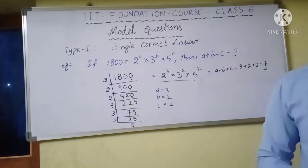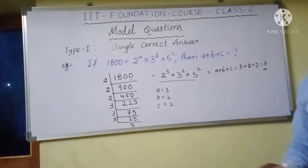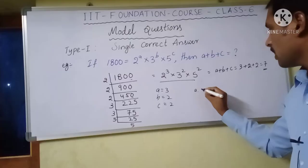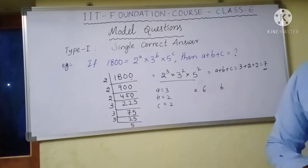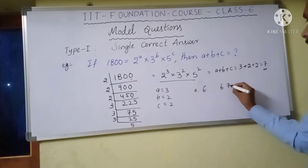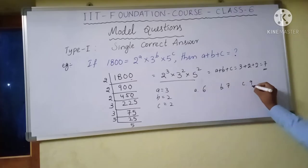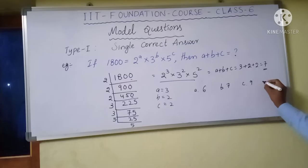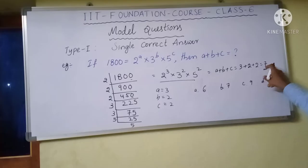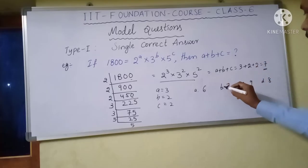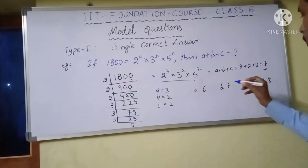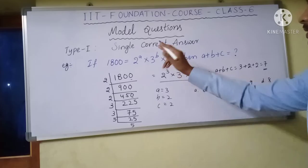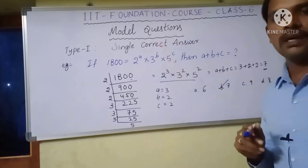Looking at the given options: Option A is 6, Option B is 7, Option C is 9, and Option D is 8. We got 7, so the answer is Option B. Here only a single answer is correct — this is the Single Correct Answer type.